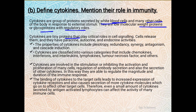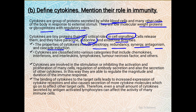Cytokines are tiny proteins that play a crucial role in cell signaling. Cells release them and they have paracrine, autocrine, and endocrine activities. The properties of cytokines include pleiotropy, redundancy, synergy, antagonism, and cascade induction. Pleiotropy means multiple effects; synergy means two cytokines can work with complementary function; antagonism means two cytokines can work with opposing effects.